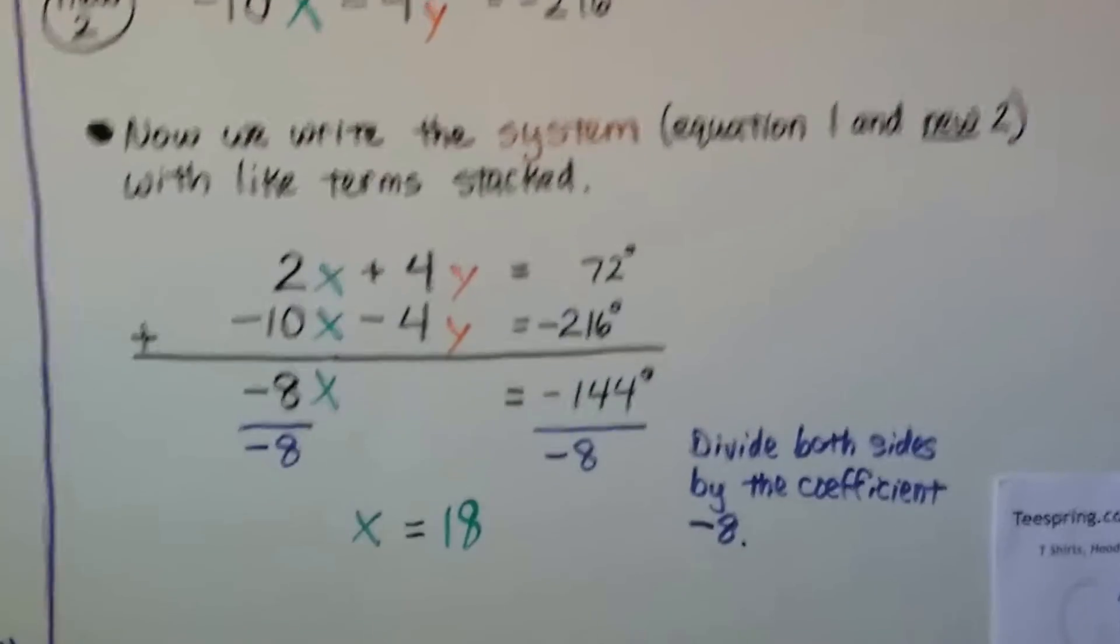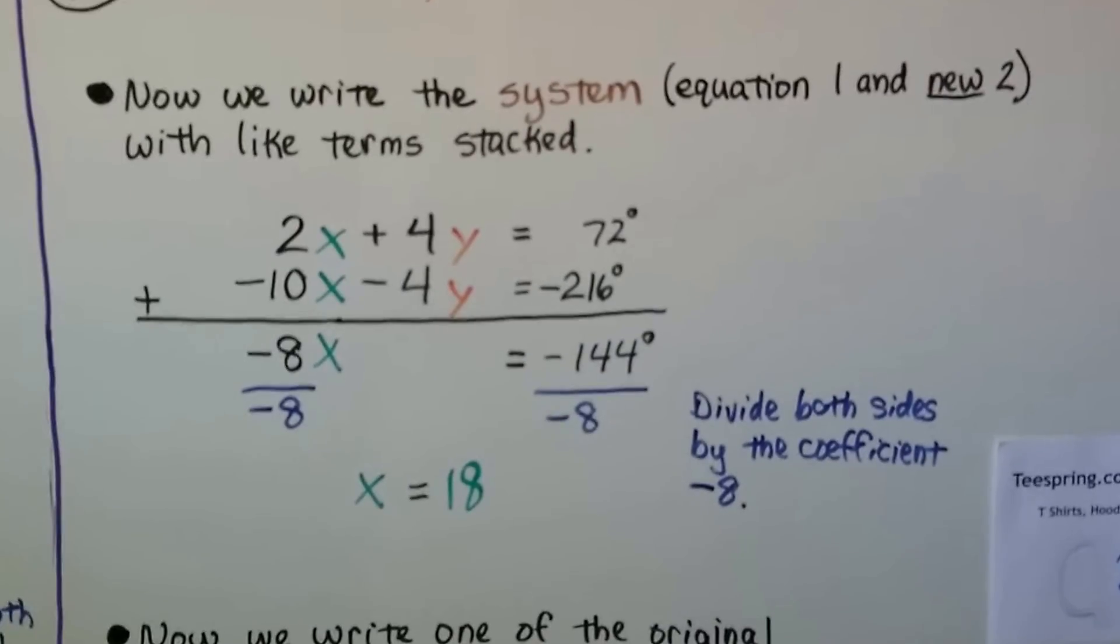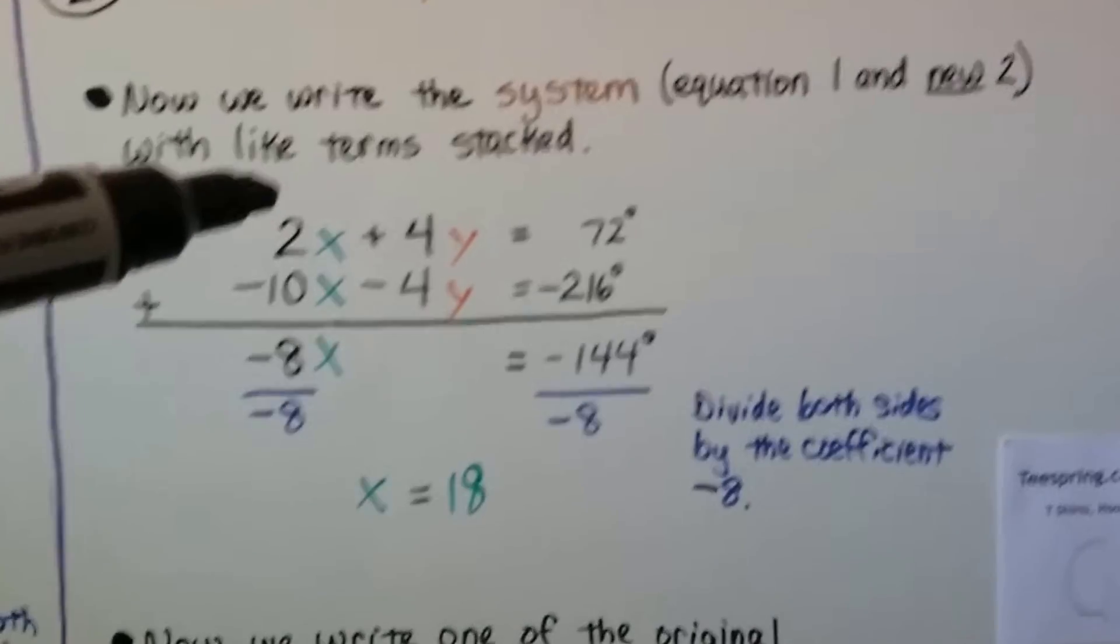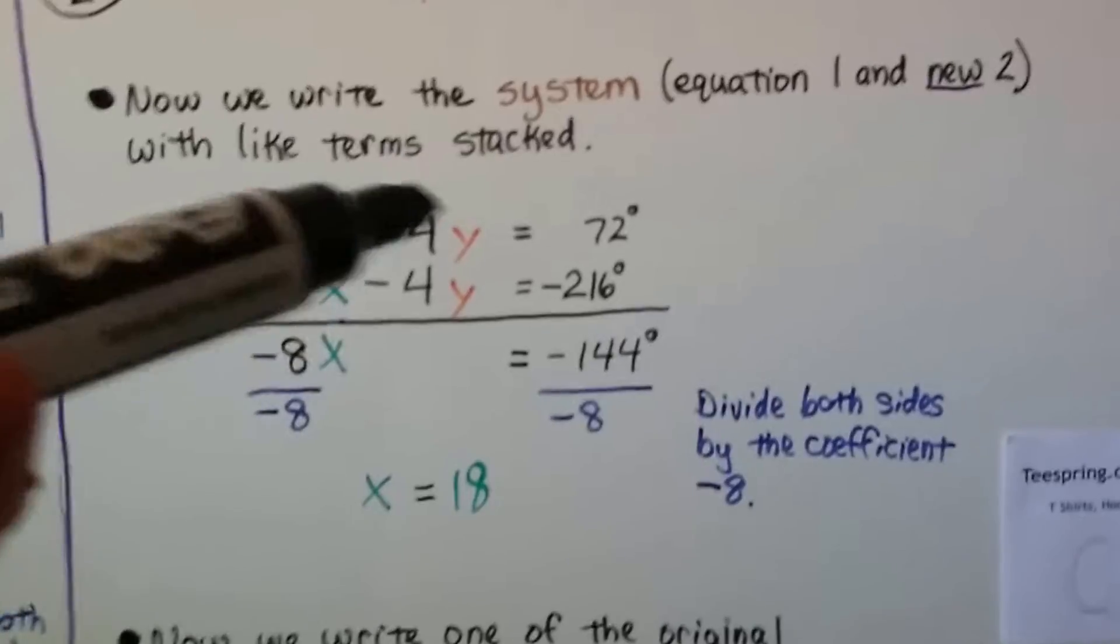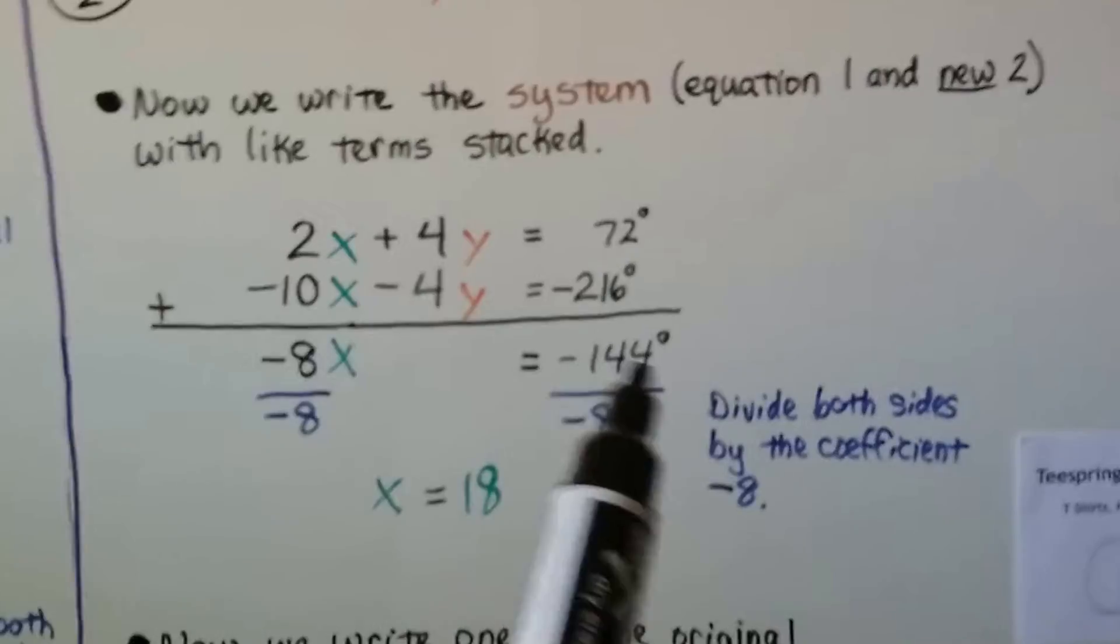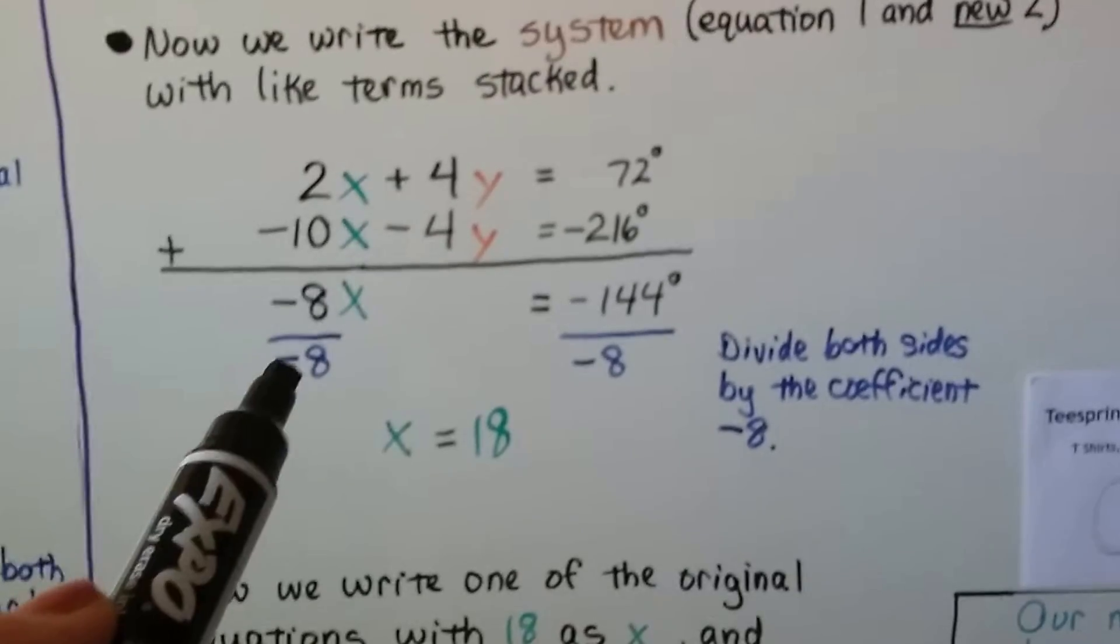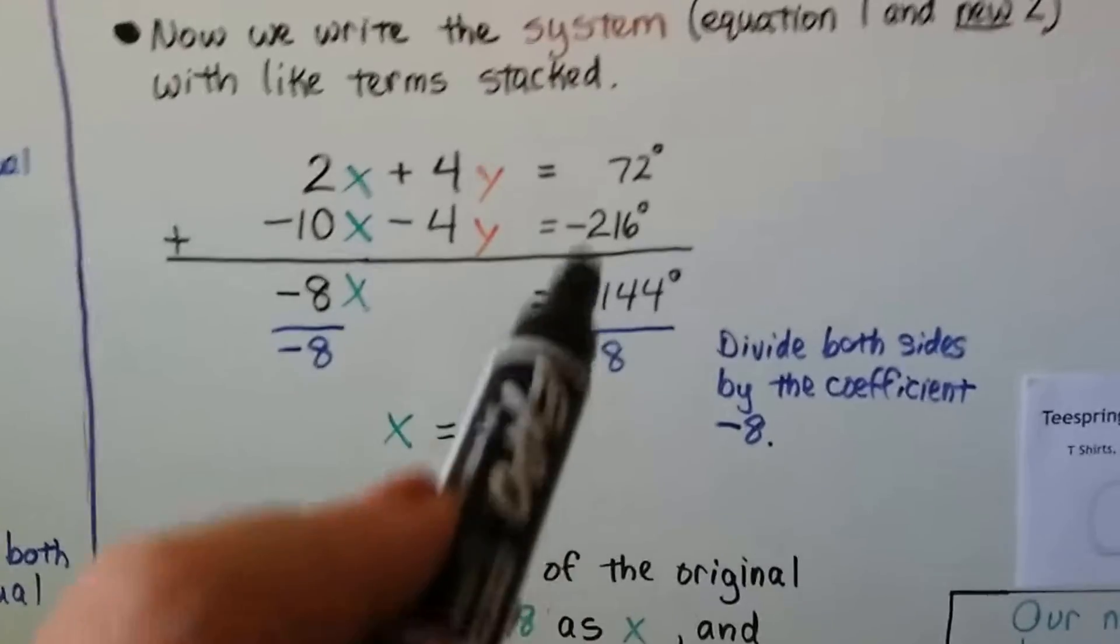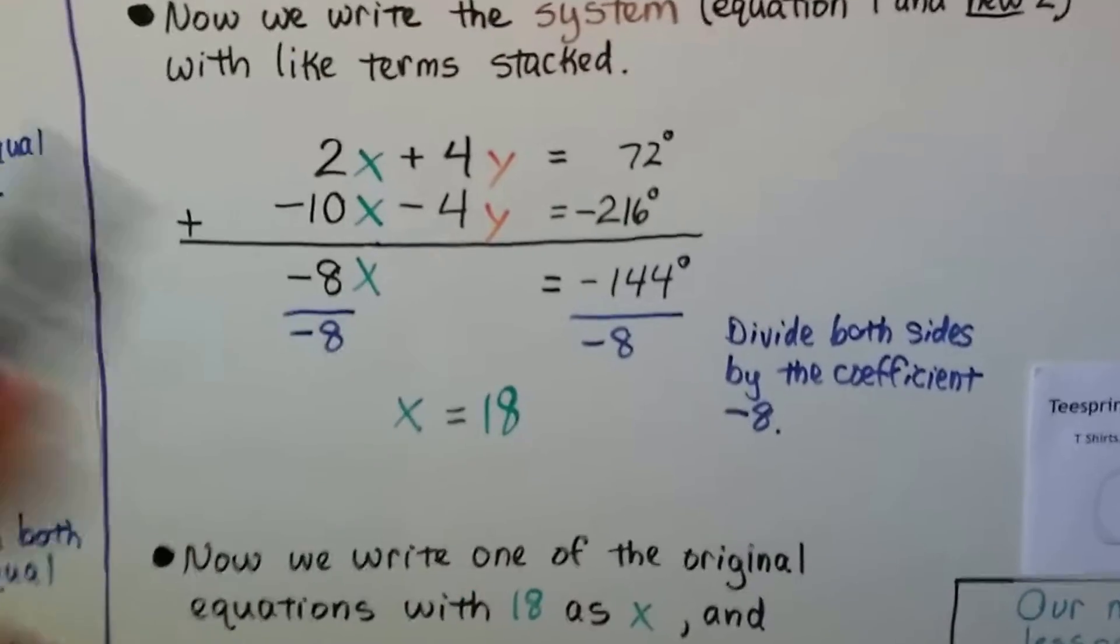Now we write the system, equation 1 and new 2, with like terms stacked. So now we've got 2x minus 10x gives us a negative 8x. This makes a zero pair, and 72 minus 216 is a negative 144. We divide both sides by this coefficient, negative 8, and this negative and negative makes a positive 18. So we know x equals 18.